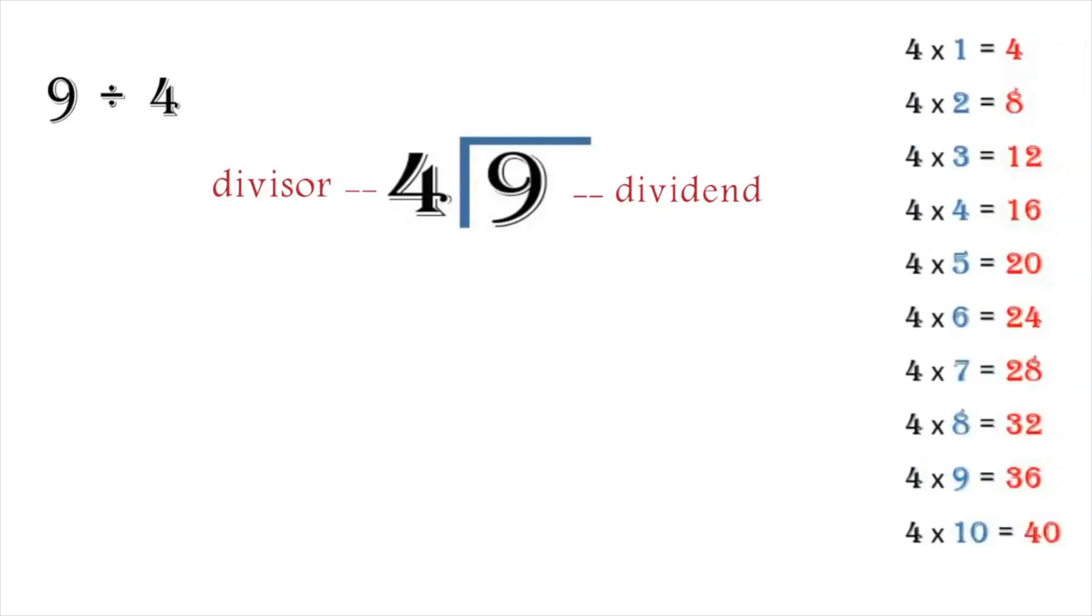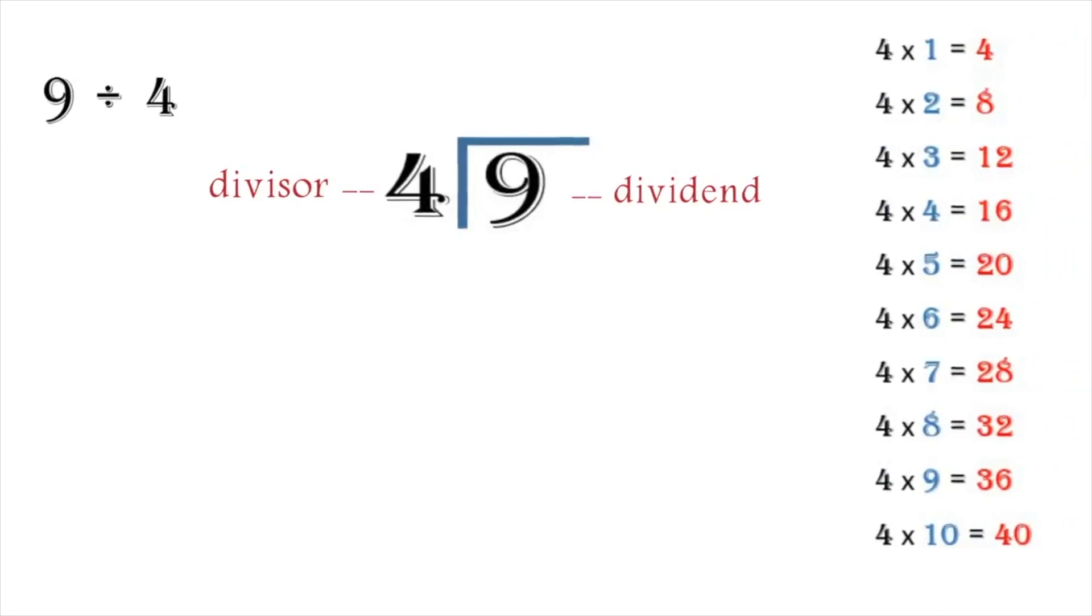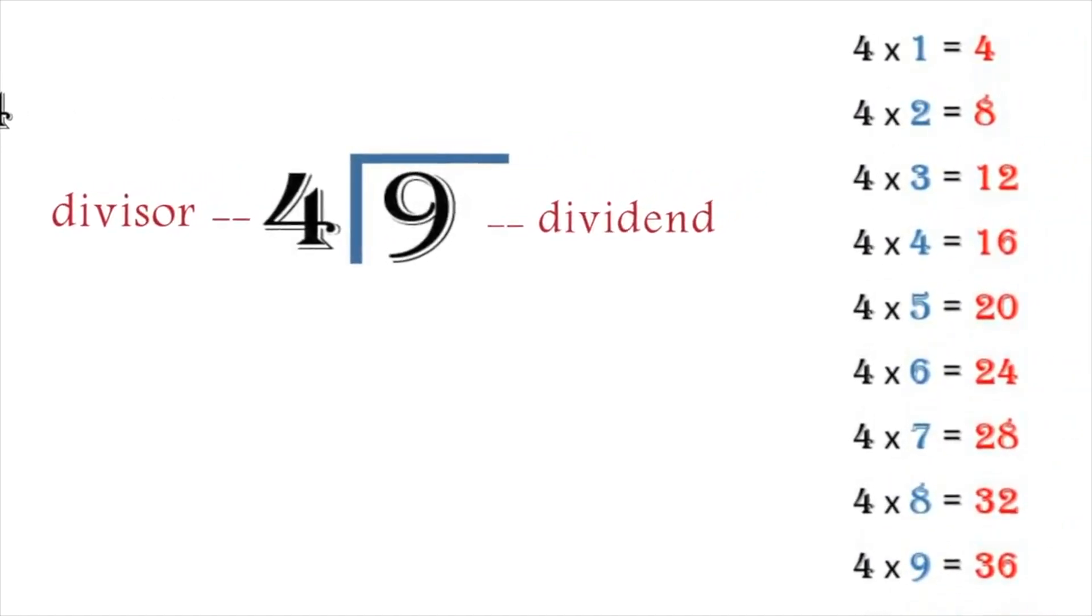Let's take an example to explain this. If you are given 9 divided by 4, we can write it in the long division form. The number here is our dividend. The 4 here is our divisor. To solve this, let's bring our 4 multiplication here. We want to find the number that is closest to 9, but not greater than 9.